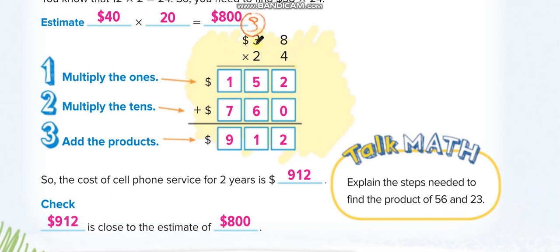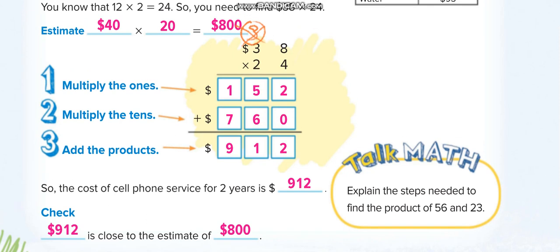Before we start multiplying 2, first write 0. And also cross out the carry so you don't add it again. Now 2 times 8 is 16 — write 6 here and carry 1 above the 3.